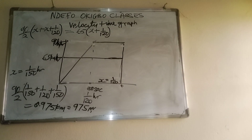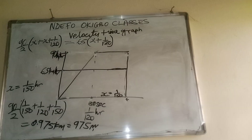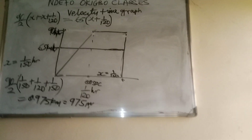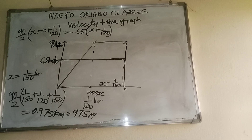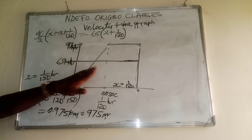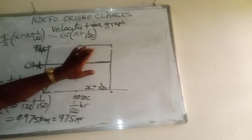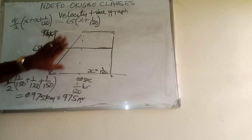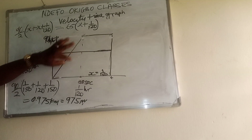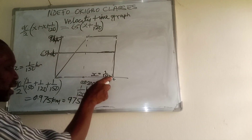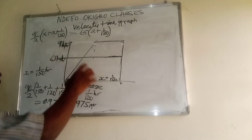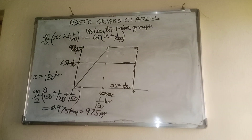The total distance traveled by the first car is the area of the rectangle. The total distance traveled by the second car is the area of the trapezium. The key step is getting X by equating the two areas, then using X to calculate the trapezium area and get the final answer. Thank you all very much.